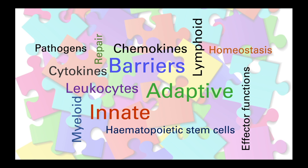The immune system comprises billions of white blood cells or leukocytes that reside in tissues or circulate the body looking for any threat, communicating with one another through soluble cytokines and chemokines, which allow these cells to carry out a diverse array of effector functions. All the cells of the immune system are derived from hematopoietic stem cells that follow either a myeloid or lymphoid lineage to produce many different types of cells that work together to remove pathogens, repair damaged tissue and restore homeostasis. As we move through this course, we will look more in depth at the various components of the immune system and how they contribute to an effective immune response.